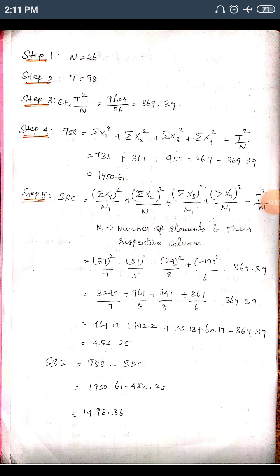Step 4: Total Sum of Squares (TSS). The formula is TSS = (ΣX1² + ΣX2² + ΣX3² + ΣX4²) − CF. Substituting the values from the table and subtracting the correction factor gives us the TSS value.